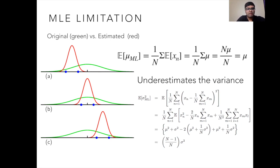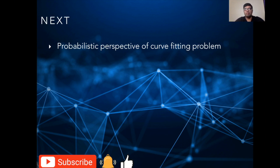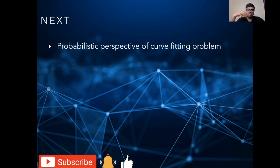In a nutshell, maximum likelihood estimation accurately estimates the mean of the Gaussian distribution, but it underestimates the variance, and this leads to bias in the learning curve. We discussed probability density functions, mean, variance, covariance, and Gaussian distribution. We also discussed maximum likelihood estimation of the parameters of an unknown Gaussian distribution from observed data. In the next video, we will discuss a probabilistic perspective of the curve fitting problem and how to use Bayes theorem to estimate parameters of the polynomial problem. Ruchika will also discuss an implementation of MLE for Gaussian distribution in Python. Subscribe to the channel, hit the bell icon, and don't forget to like the video. Thank you!